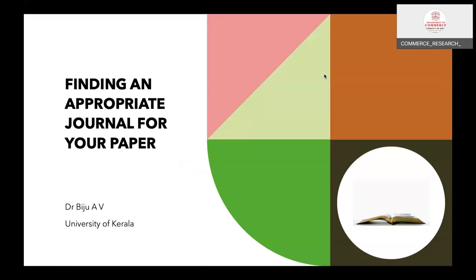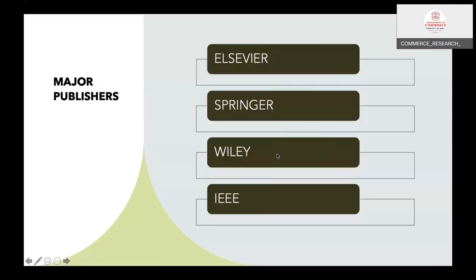Finding an appropriate journal for your paper. We have a lot of publishers, and we have to be careful because there are a lot of fake and clone publishers. We are not supposed to publish our manuscript with fake and clone publishers. We have to be careful that the manuscript should be indexed in Scopus as well as Web of Science. Indexation is important, and we have to find the impact factor — the higher the impact factor, the better it is to publish.